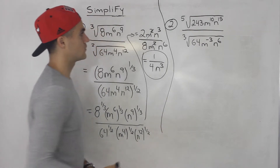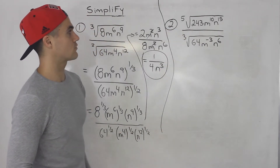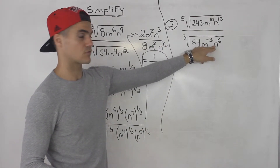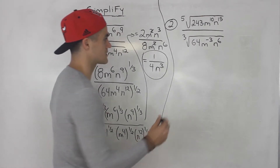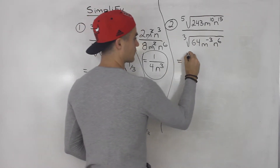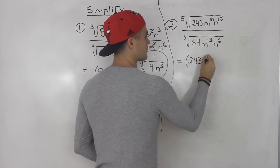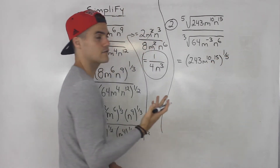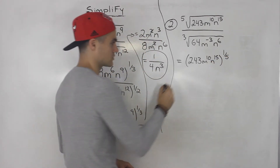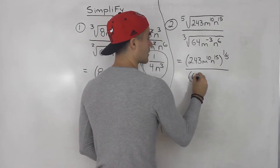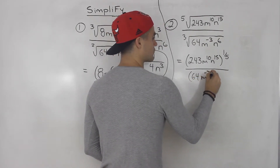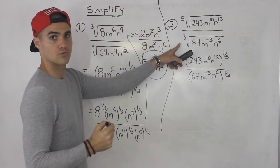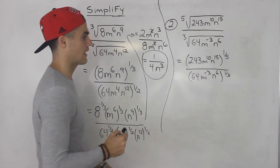Number 2: we have the fifth root of 243m to the 10, n to the 15, all over the third root of 64m to the negative 3, n to the 6. So pretty much the same thing. We're going to take 243m to the 10, n to the 15 to the power of 1 over 5 — take the radical expression, change it to a rational exponent. Same thing here: 64m to the negative 3, n to the 6, changed to the power of 1 over 3, since the third root is the same as to the power of 1 over 3.